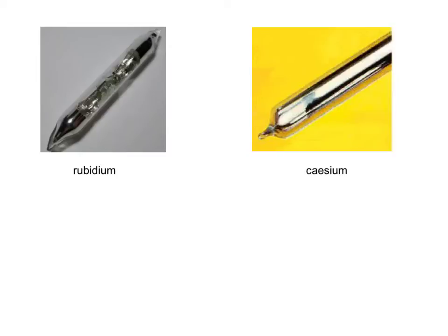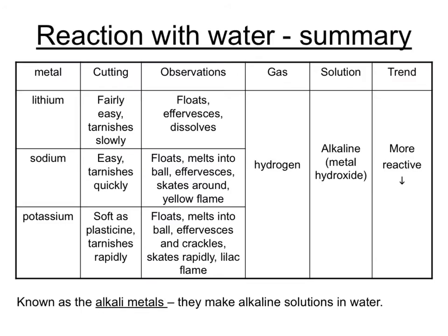The other three elements are rubidium, cesium and francium. Rubidium and cesium you're only likely to see when you're at university. These are very reactive with water and can be explosive. Francium is incredibly rare and you're unlikely to see any sample of it. You have to be aware then of some of the observations and inferences that you can make from the reactions with water.